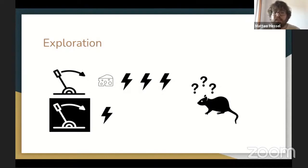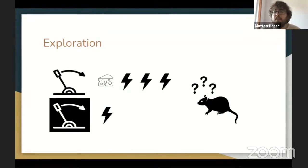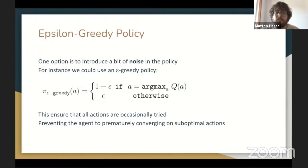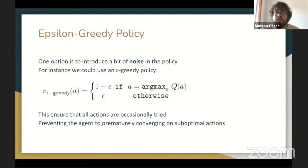This is critical to the bandit problems discussed in the previous lecture, and amounts to trading off what we call exploration and exploitation — collecting rewards based on current knowledge versus exploring courses of action that might seem suboptimal now but could turn out to be better. One option is instead of being a fully greedy rat, we could introduce a bit of noise in the policy — for instance, using an epsilon-greedy policy that selects the most promising action most of the time but picks another action at random with some small probability epsilon every step.